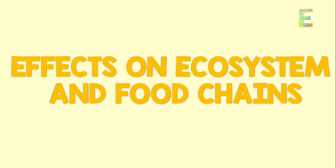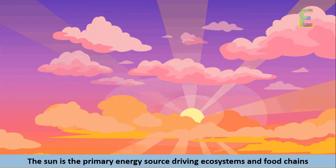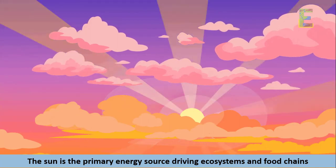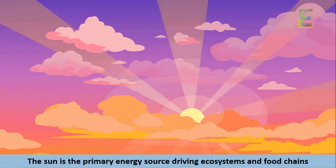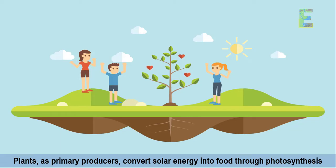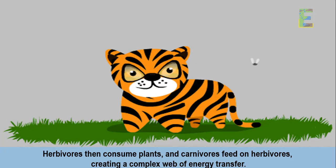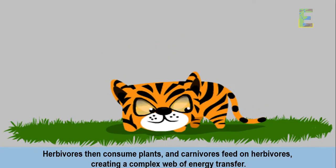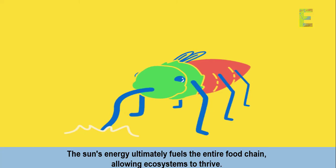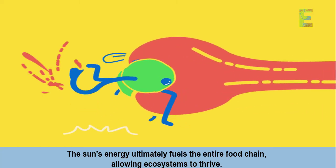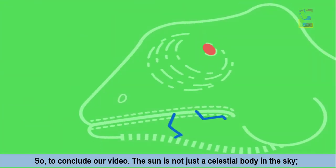Effects on Ecosystems and Food Chains. The sun is the primary energy source driving ecosystems and food chains. Plants, as primary producers, convert solar energy into food through photosynthesis. Herbivores then consume plants, and carnivores feed on herbivores, creating a complex web of energy transfer. The sun's energy ultimately fuels the entire food chain, allowing ecosystems to thrive.